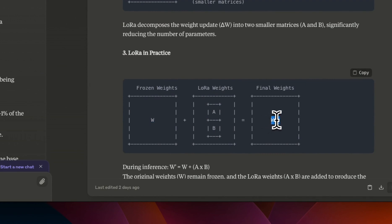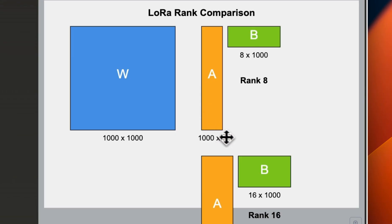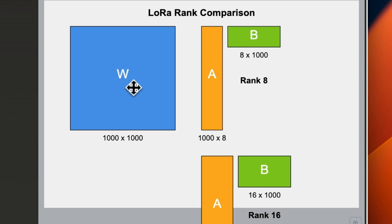The rank of LoRA controls the number of parameters. If you keep the rank low, the number of parameters you're training is pretty small, meaning it's not going to have too much impact on the actual weight updates. You can increase the rank, but that means you're adding more parameters, which means more VRAM.